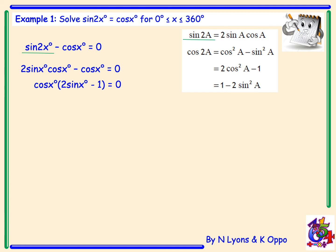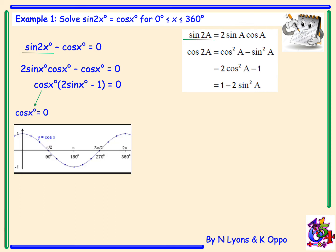We solve these separately. Equating cosx to zero first — drawing the cosine graph, we can see it's equal to zero at 90 degrees and 270 degrees. Then we make 2sinx - 1 = 0, which rearranges to give sinx = 1/2.